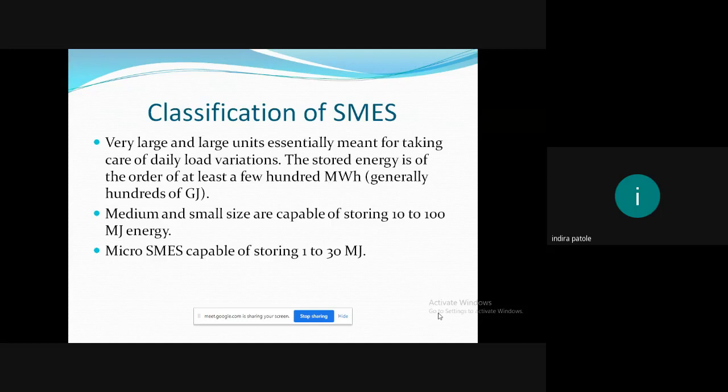Units of the second classification is medium and small size, which are capable of storing energy of 10 to 100 megajoules. These units are useful for stabilizing the power system against the low frequency oscillations and also to support a generating plant for a few seconds or minutes. In case one generator out of several generators which are working for the plant fails, you can use the SMES unit. Then the third classification is of micro SMES capable of storing 1 to 30 megajoules of energy. These can be used for supplying critical loads during voltage sags and total power interruptions lasting for only a few seconds. When used as UPS, it is capable of supplying megawatt of power for durations of order of a few seconds. So, typically a kilowatt, one kilowatt hour unit, that is 3.6 megajoules can support 1.2 megawatt of load for 3 seconds.